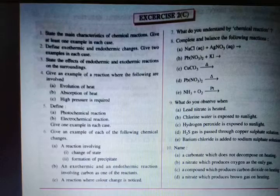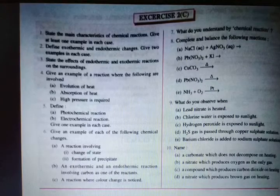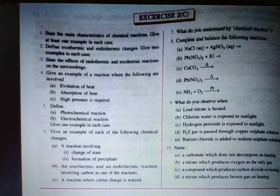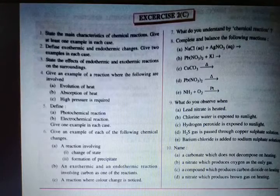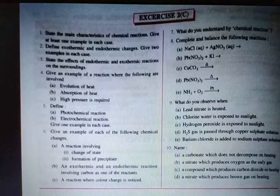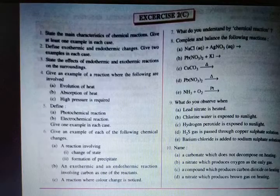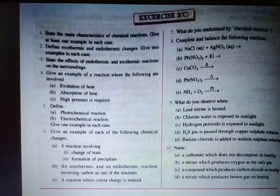Give examples of reactions involving: evolution of heat — exothermic reaction; absorption of heat — endothermic reaction; high pressure — ammonia production requires 200–900 atmospheres. Define photochemical reaction — example: decomposition of silver nitrate or photosynthesis (formation of glucose). Electrochemical reaction — previously discussed; examples are compulsory. In chemistry, examples are extremely important in every answer.